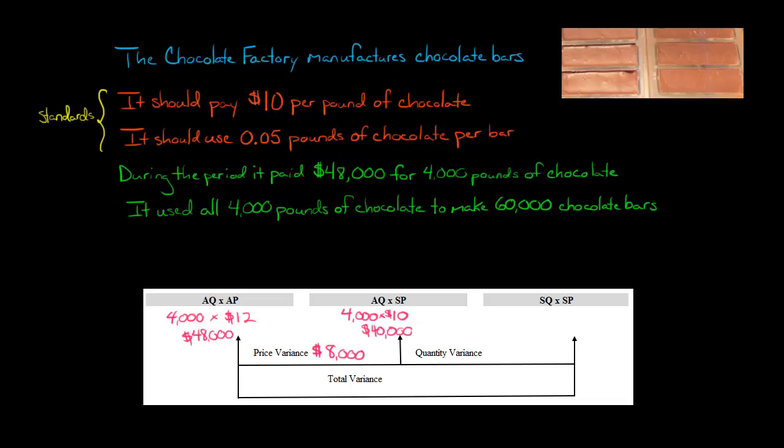Now, think about this. We actually paid $12 per pound when, in fact, our standard of what management thought was $10 per pound. So we paid more than what we believe the standard should be. So we will call that an unfavorable price variance. I'm going to put a little U here. This is an unfavorable variance of $8,000, unfavorable price variance. So that might indicate maybe we should go and talk to the purchasing manager and say, hey, why was it that we ended up paying a lot more than what we believe was our standard rate to acquire this chocolate?